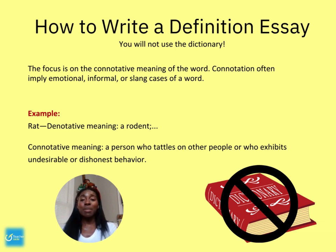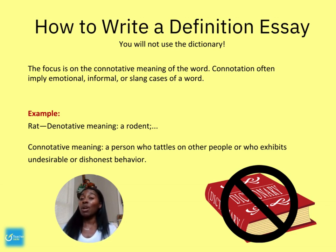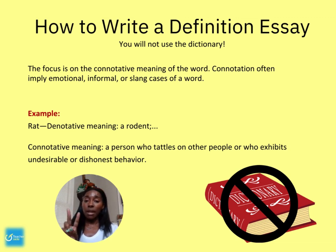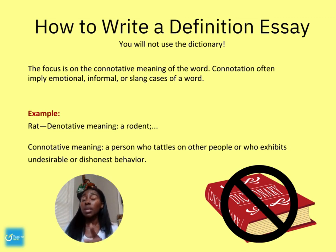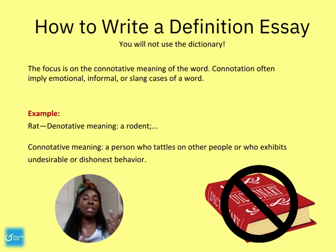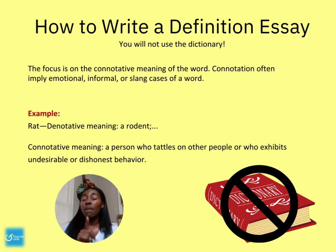A rat could also be someone who's dishonest or doing things they shouldn't be doing — so older siblings, maybe you deserved to get ratted out. Since I only have two examples and need three body paragraphs, you can use the dictionary as a compare-and-contrast element: here's what it means in the dictionary, but here's what it means outside of it. Pause and think of a word or phrase you use that doesn't match the dictionary, or maybe isn't in the dictionary at all.